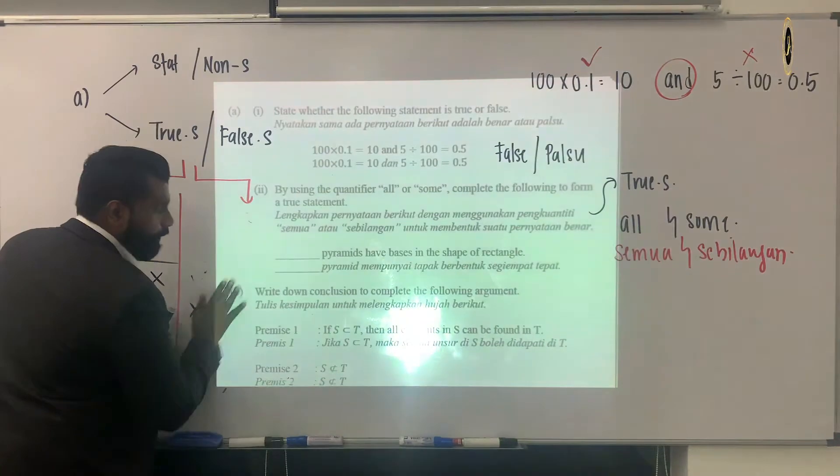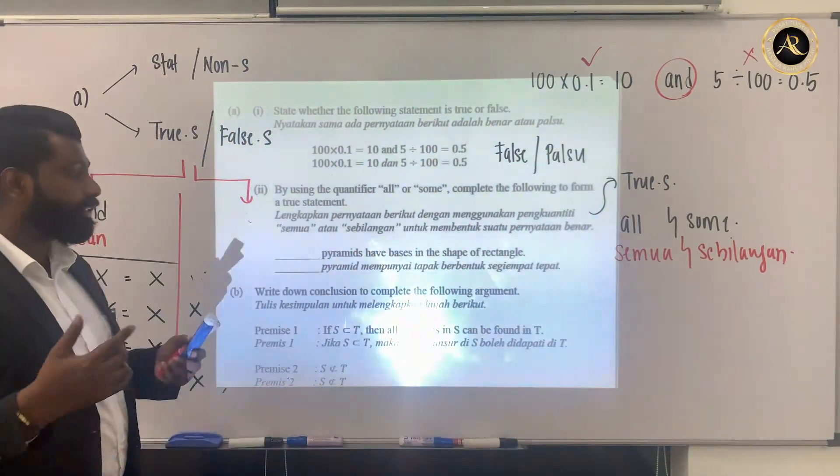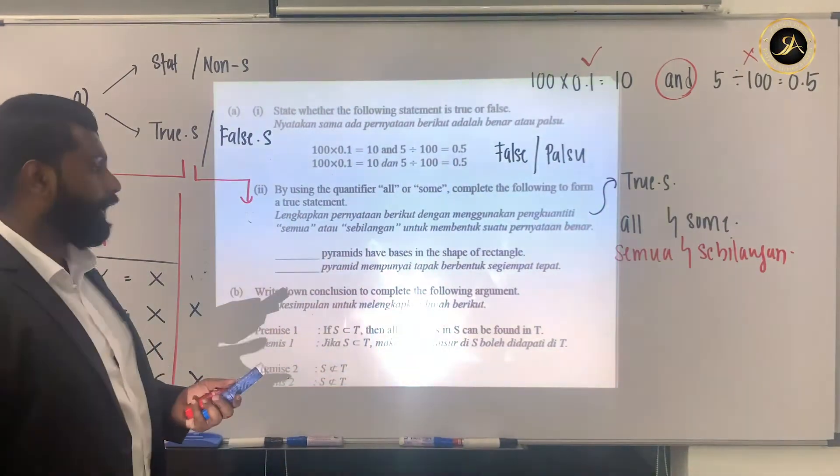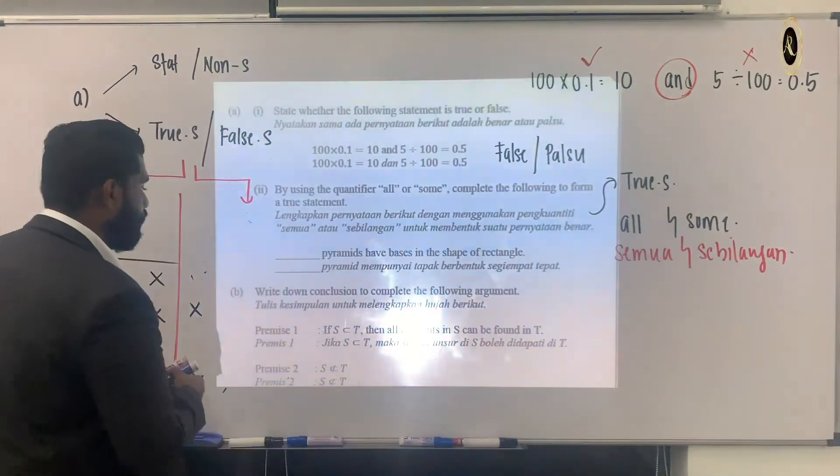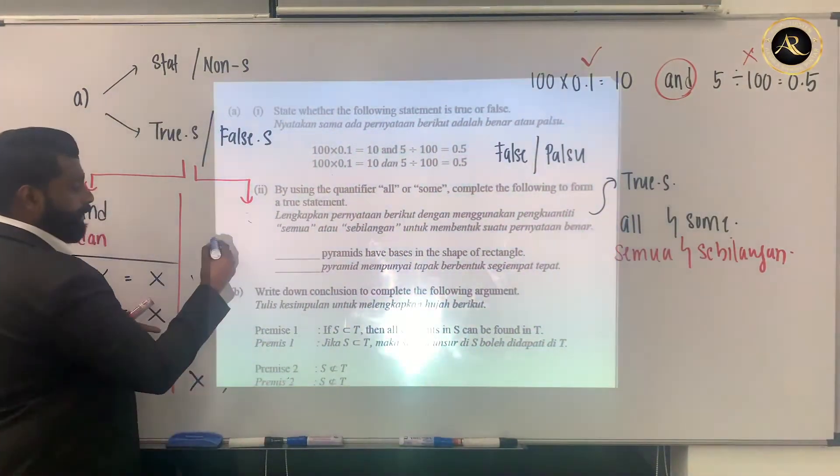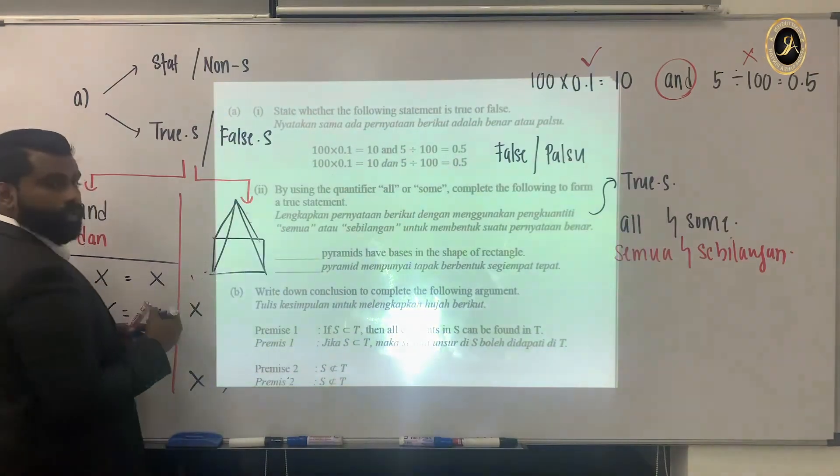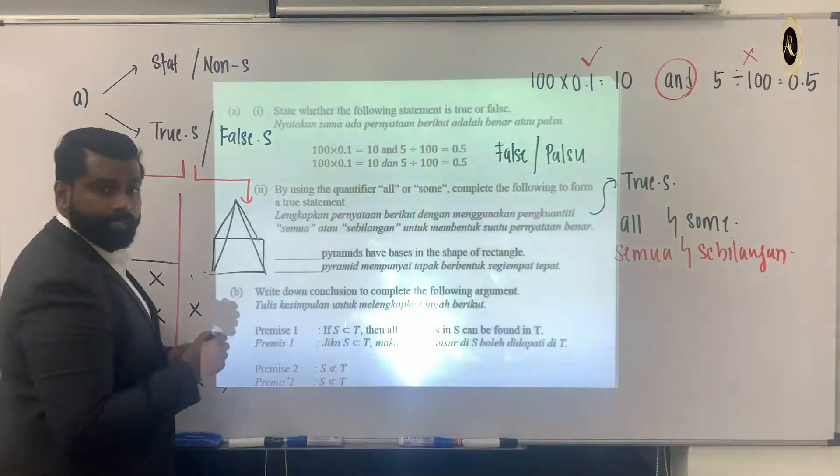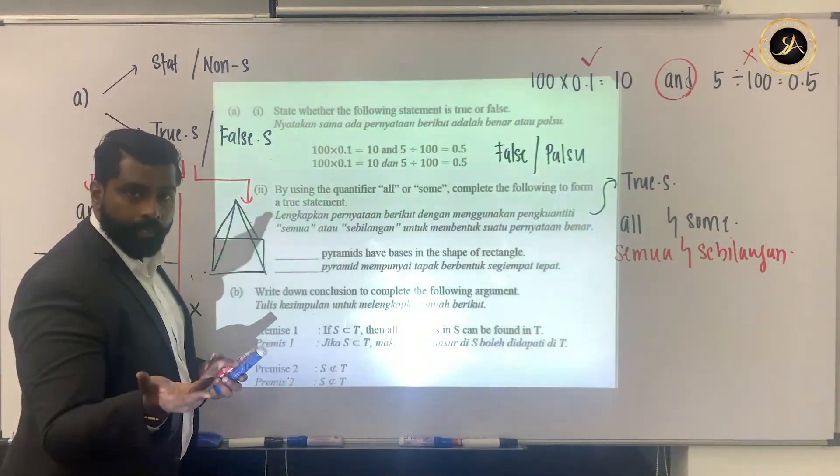The question says pyramids have bases in the shape of rectangles. Are all pyramids with bases in the shape of rectangles? No. Why? The base can be square or rectangle. For example, this is my pyramid. The base can be rectangle or square, are you agree?